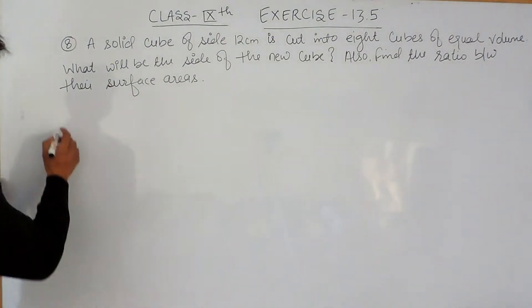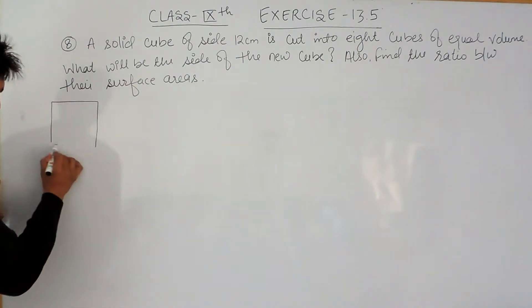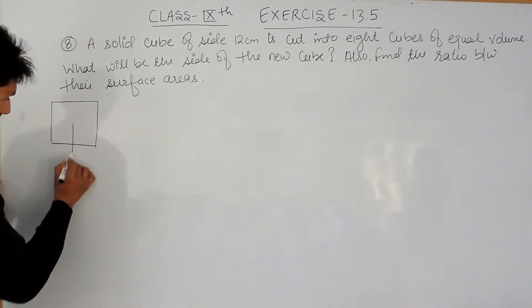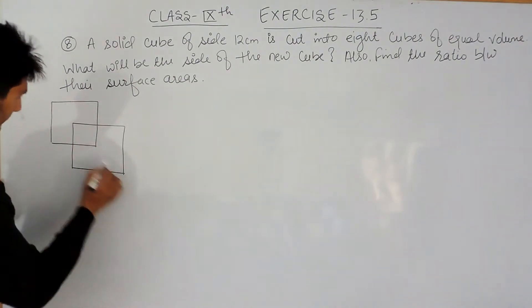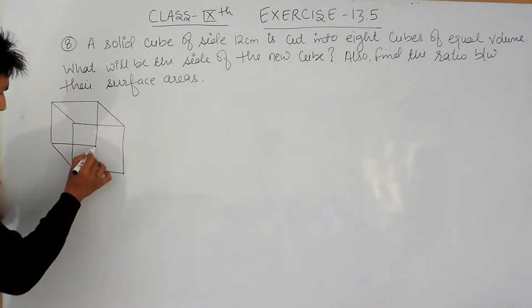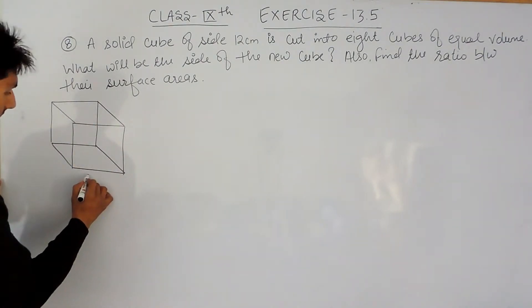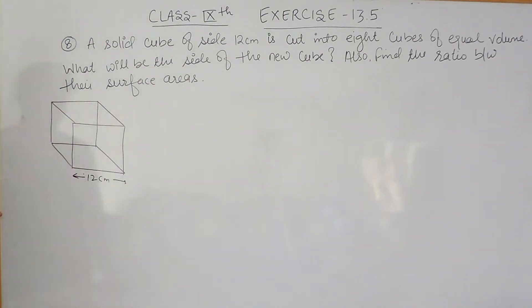So here we have a large cube. And this cube, the edge of this cube is 12 cm. And this cube is cut into 8 equal cubes. You have to find the size of this new cube.